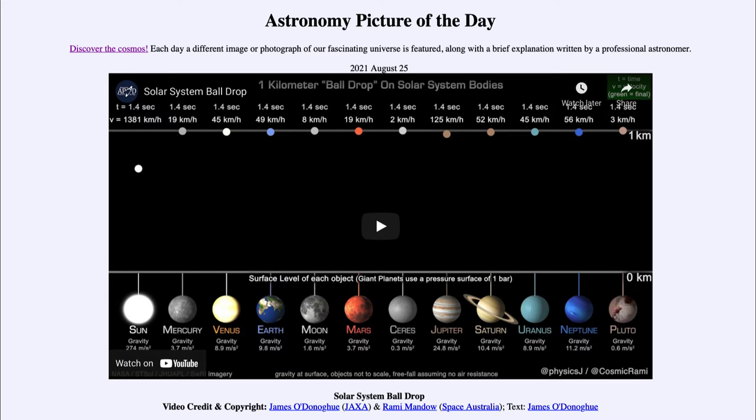Some of them, like the sun, have a very intense gravity, many times stronger than Earth's. And others, like Pluto or Ceres, will have a very low gravity. So let's go ahead and play the video and watch what happens here.